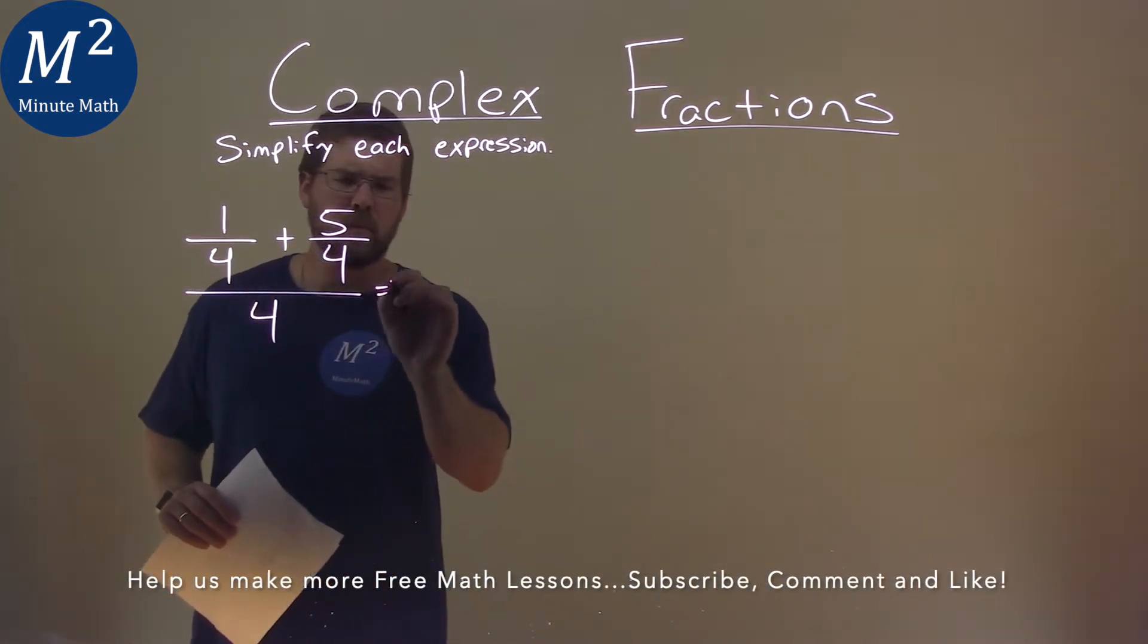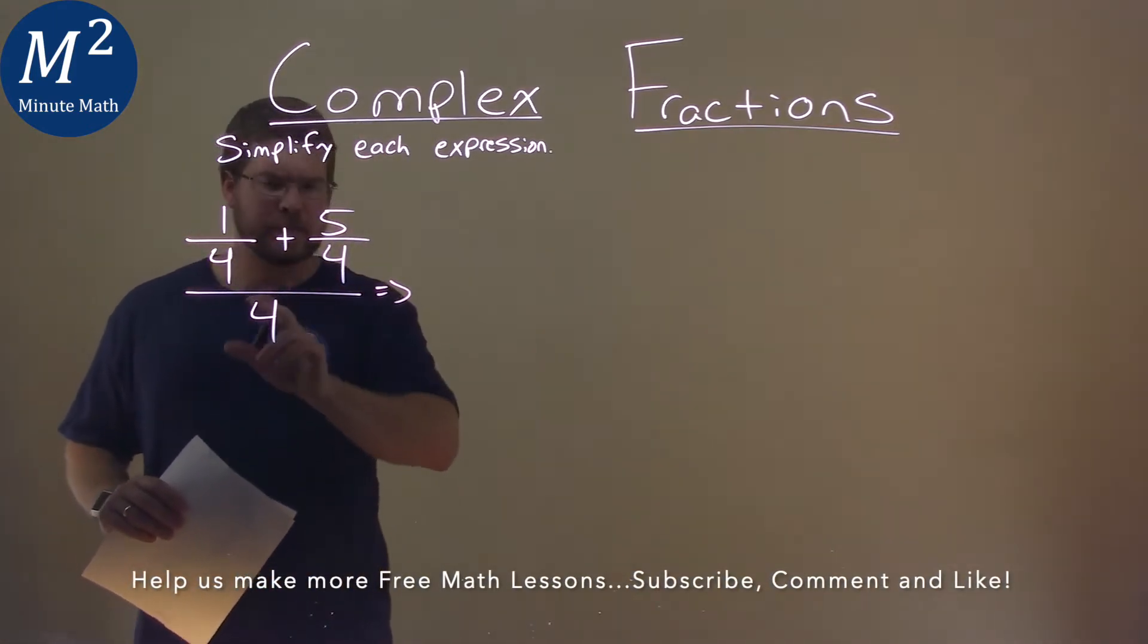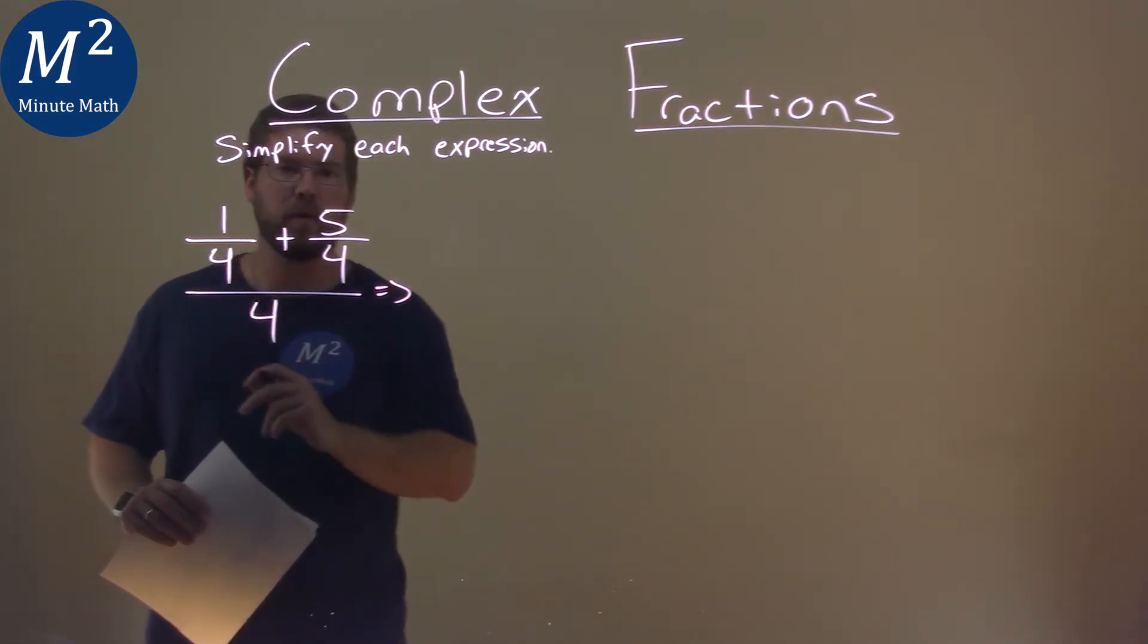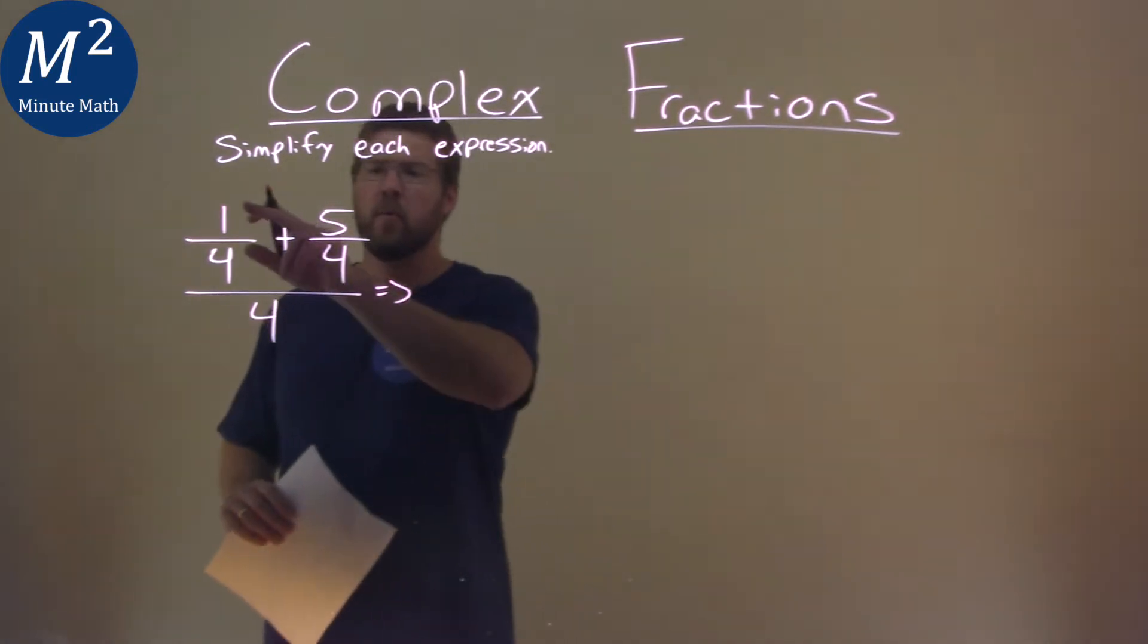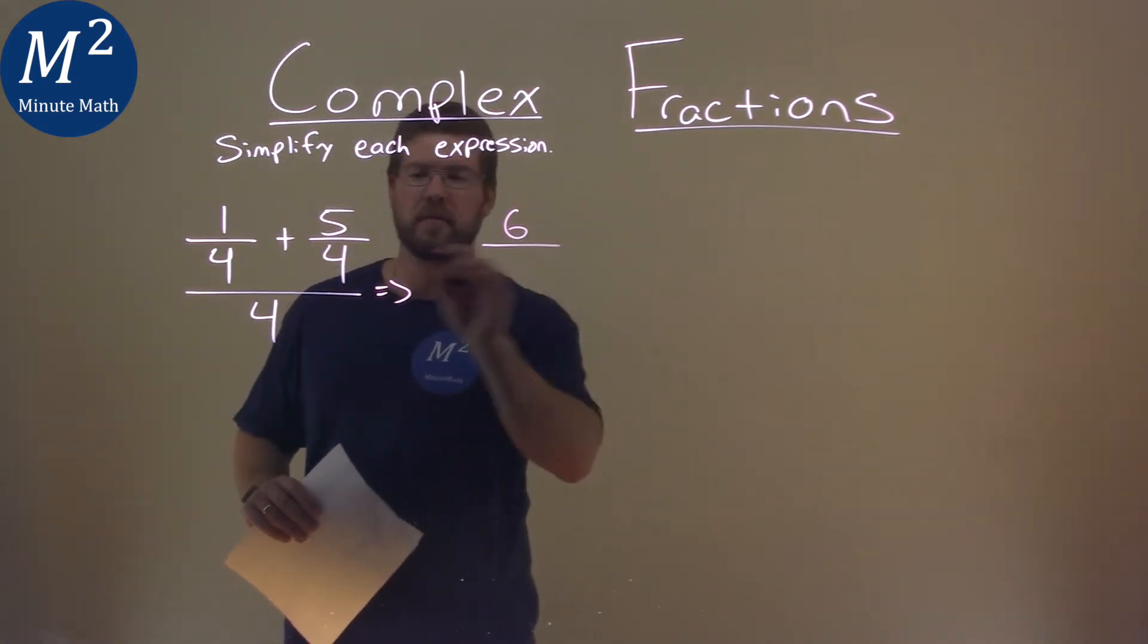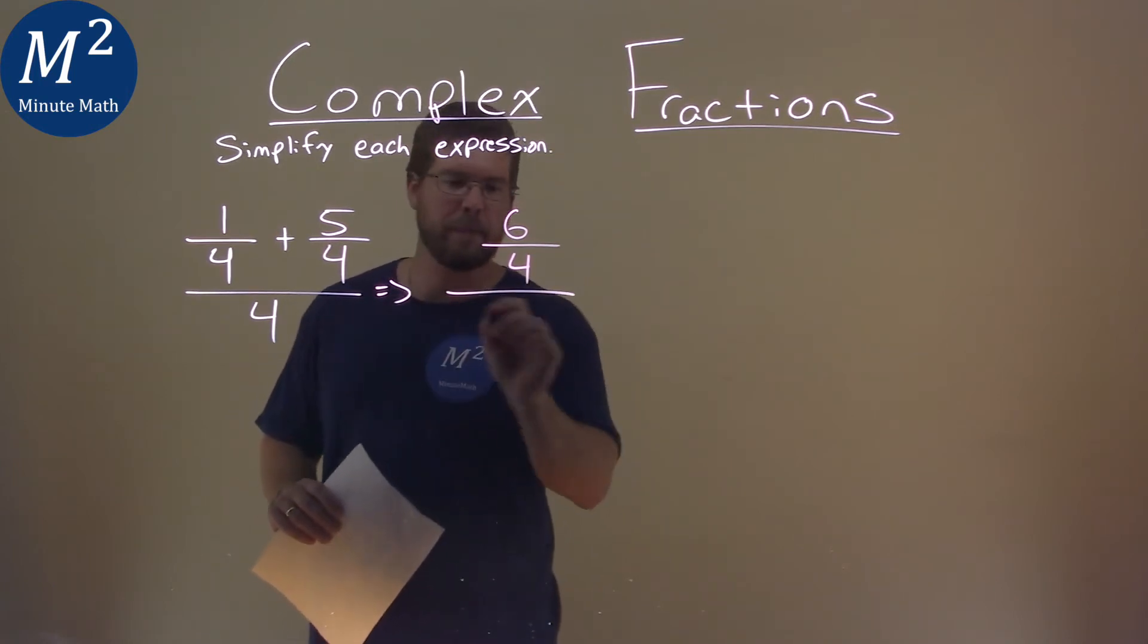Well, luckily for us, the numerator here of the big fraction has the same denominator, the fourth. So we can combine them. 1 plus 5 is 6. 4 stays in our denominator, and all of this is divided by that 4.